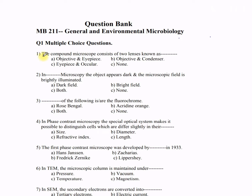Question 1: The compound microscope consists of two lenses known as — A) objective and eyepiece, B) objective and condenser, C) eyepiece and ocular, D) none. Note there is some error in the numbering of the options. The correct answer is option A — objective and eyepiece.